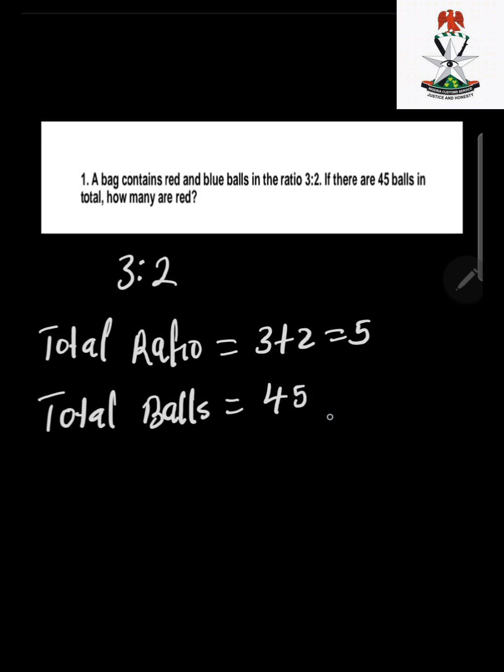What are we going to do? We're going to divide the total balls by the total ratio. So we have 45 divided by 5, which is the total ratio. This gives us 9.